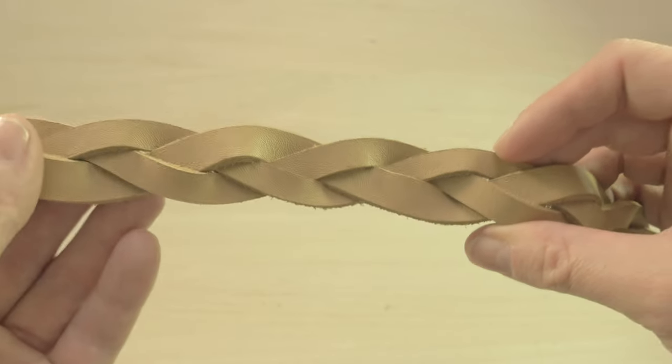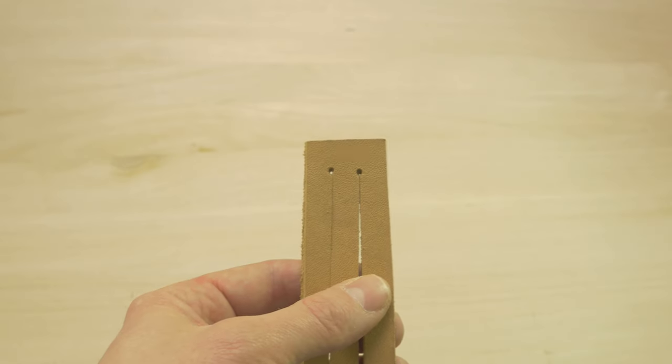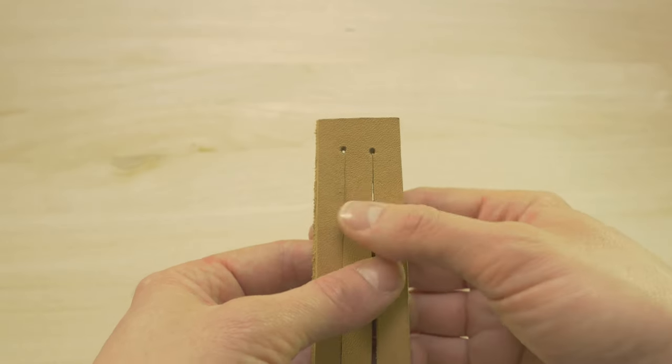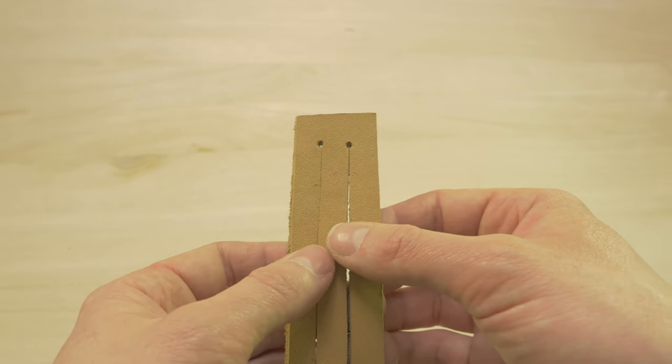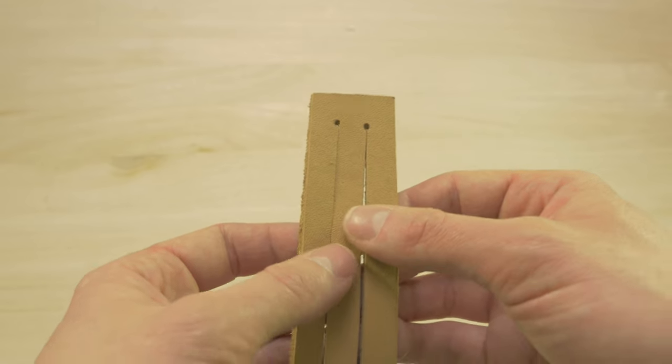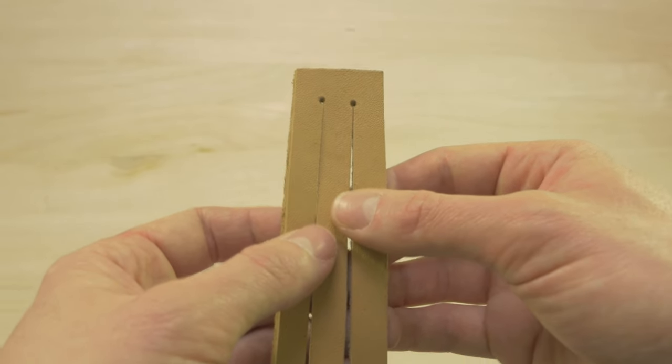It's time to start braiding. The braid is made using eight steps. Six of these are identical to the ones used in the regular three-stranded braid. So let's begin.